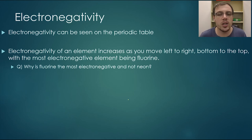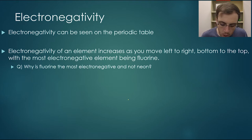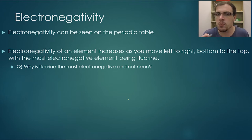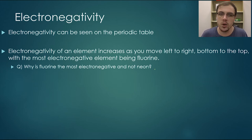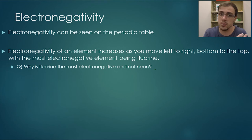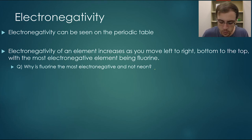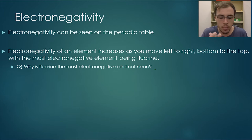Here's a question I want you to answer. I want you to pause and try to answer this: why is it that fluorine is more electronegative than neon? We can see that neon is further right on the periodic table, so why is it that fluorine is more electronegative? Pause, have a go, and resume in a moment.